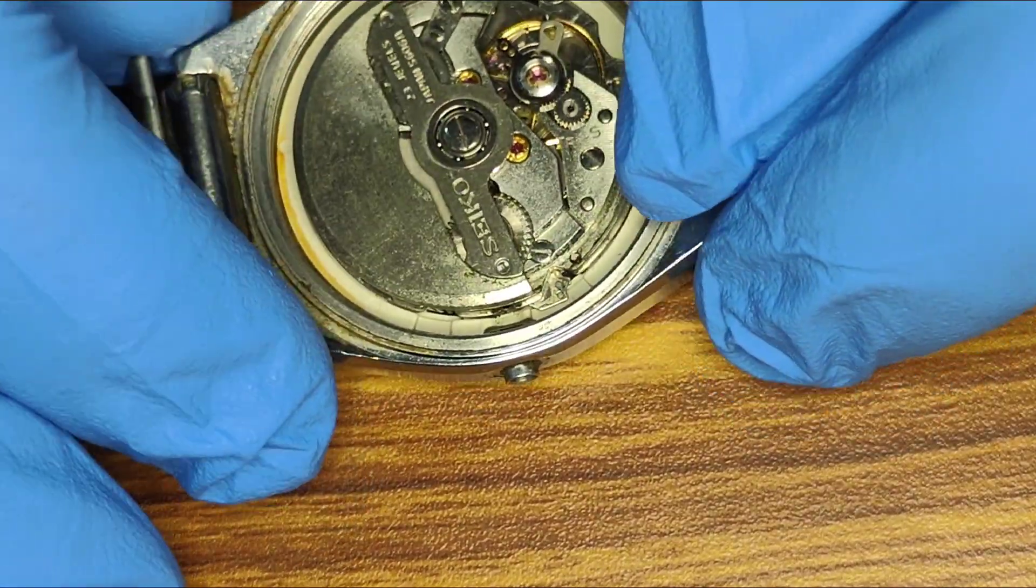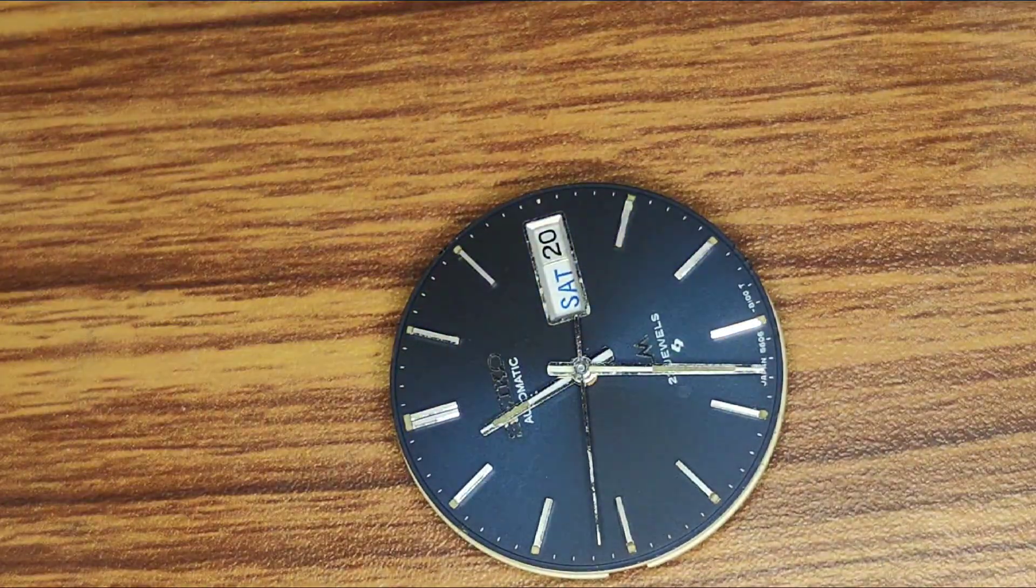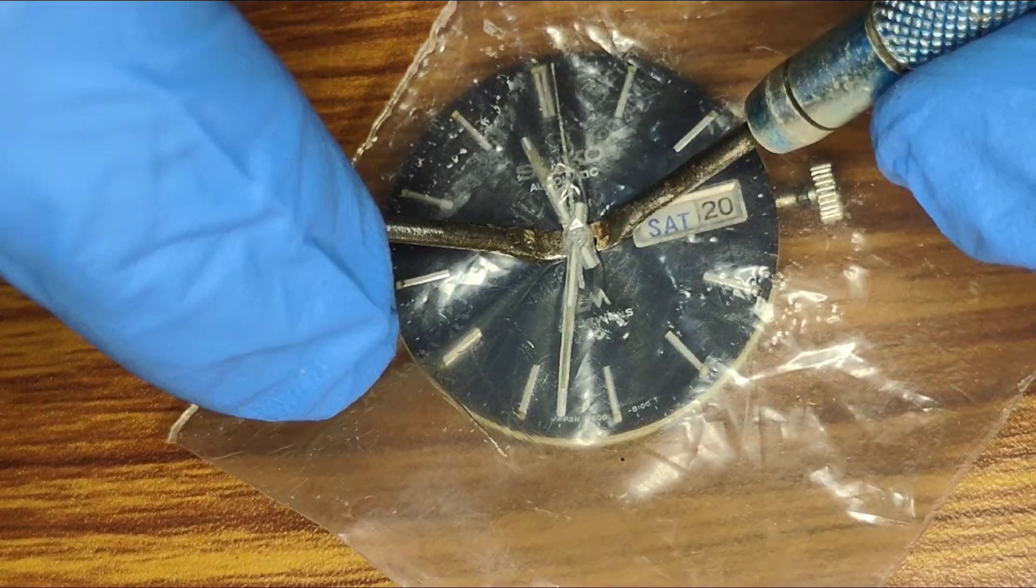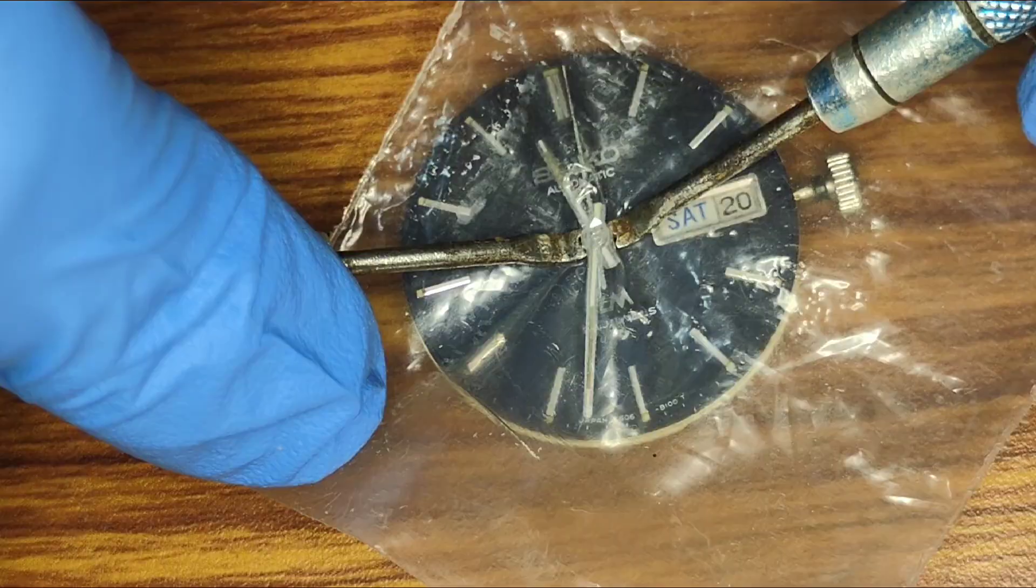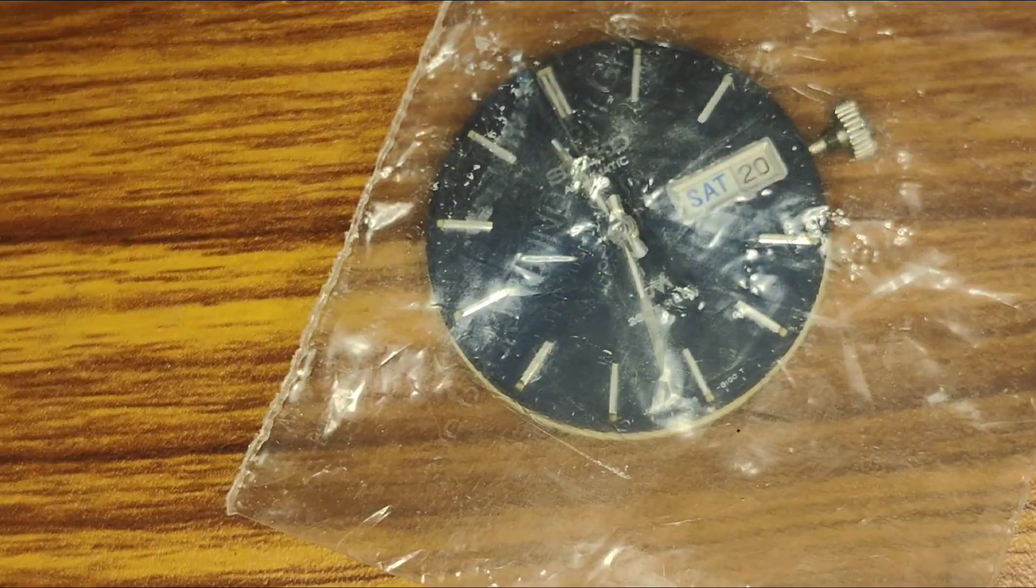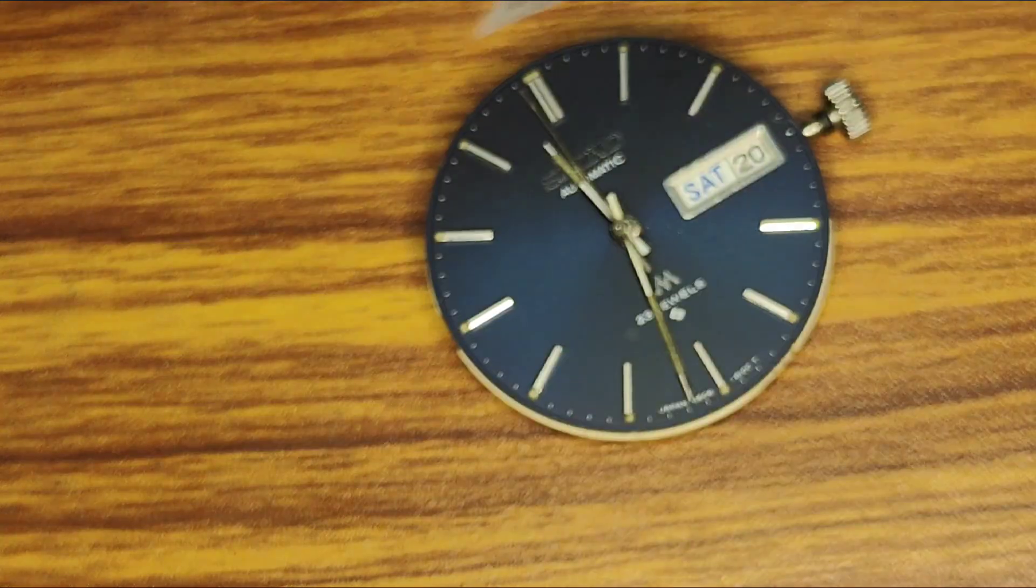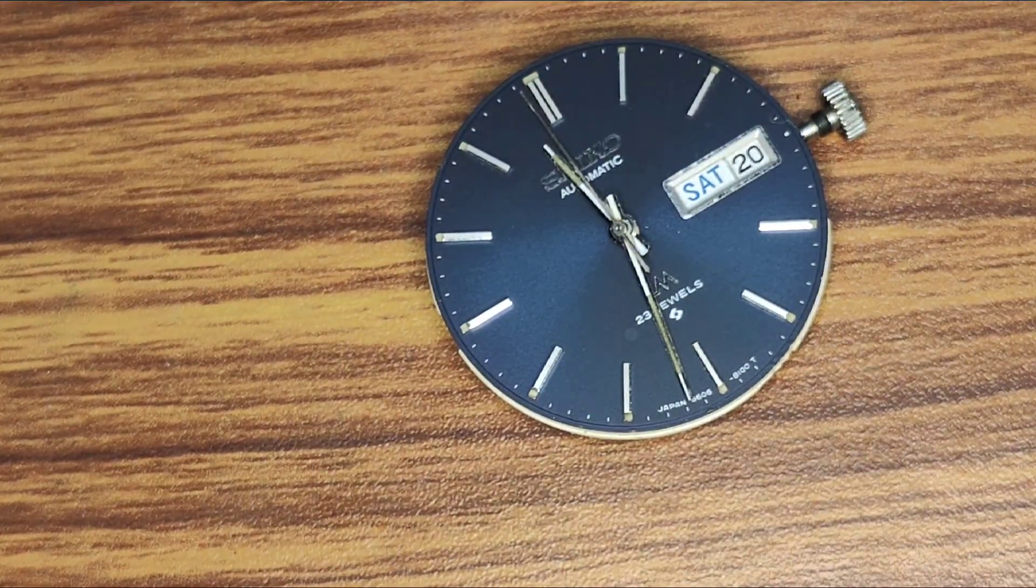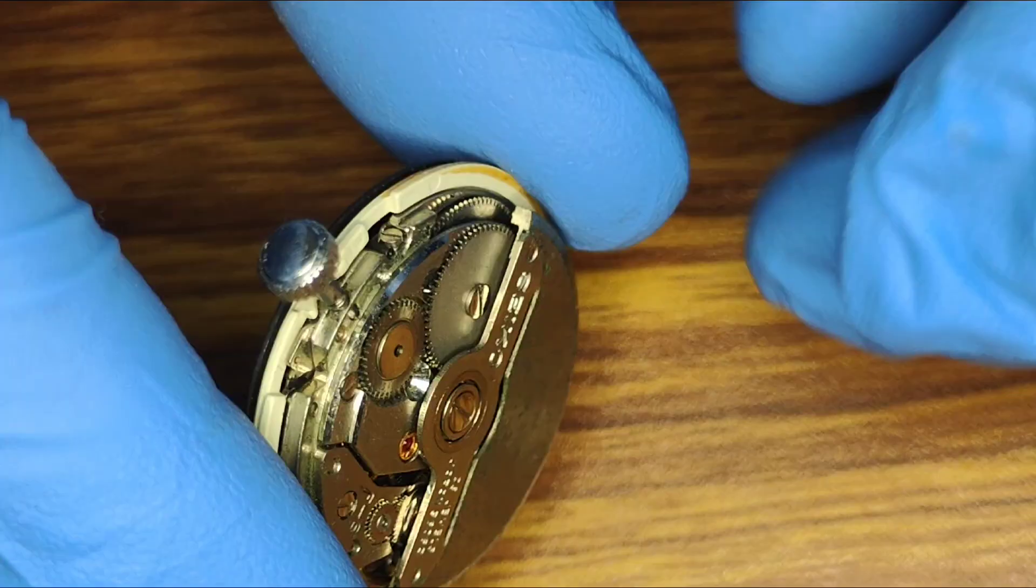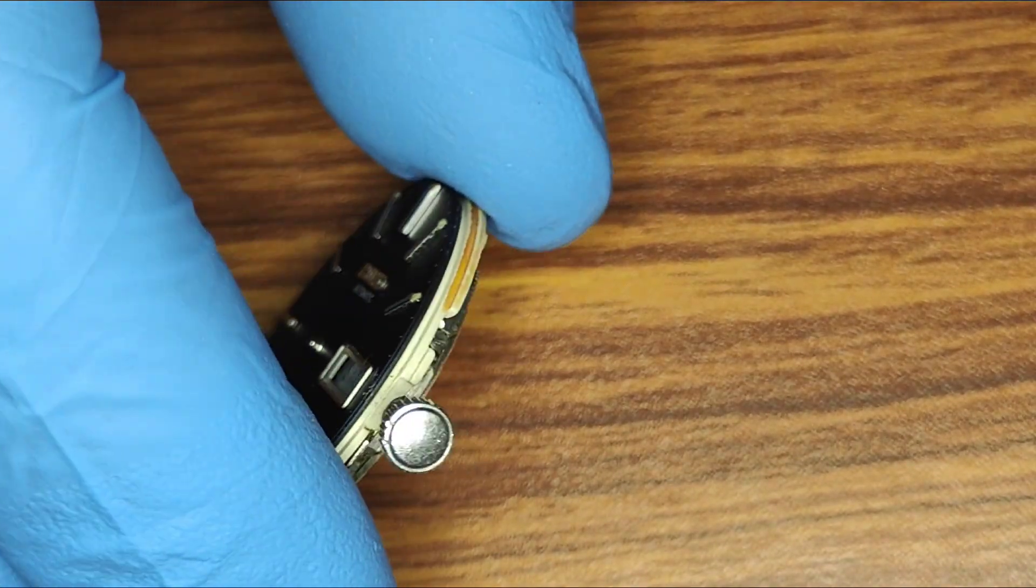Here we can see the crown stamp is directly coming out without pressing the setting lever.